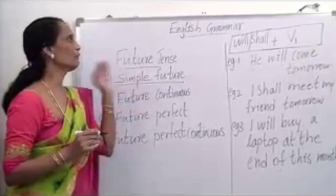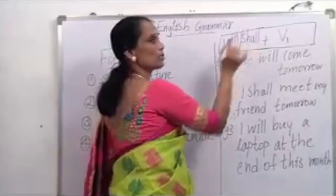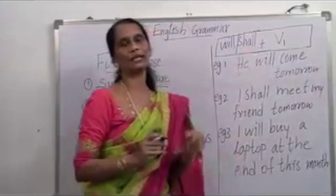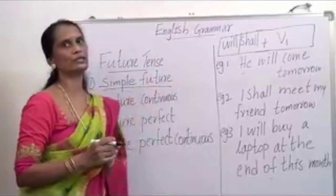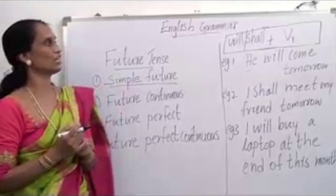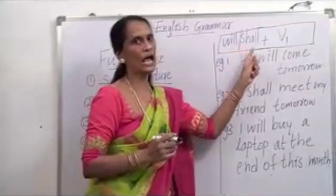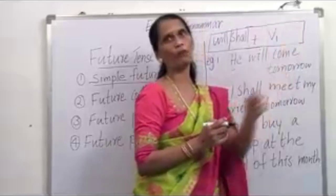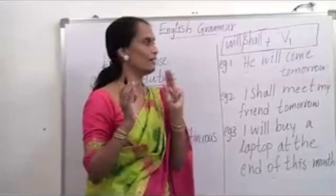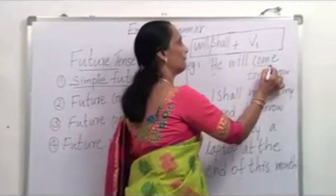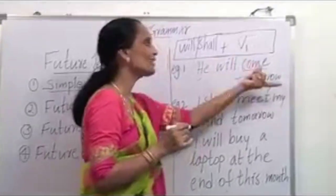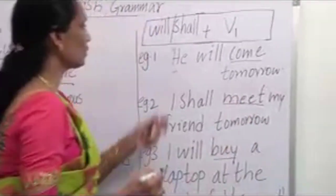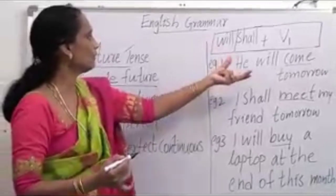In simple future, the verb formula is: will/shall + V1. V1 is the base form of the verb — the do form — as already explained in my previous video. You should remember to never use an inflected form of V1; we should always use the base form. For example, use 'come' not 'comes,' and 'meet' not 'meets.' So the formula is: will/shall + V1.